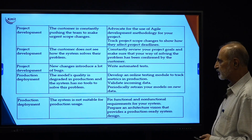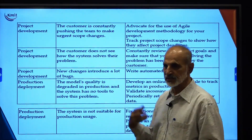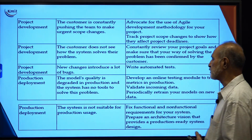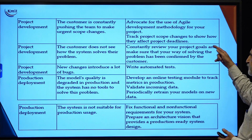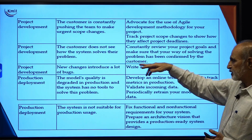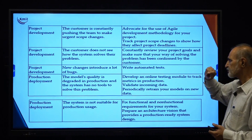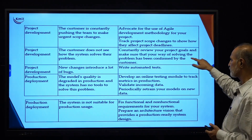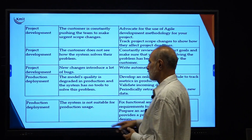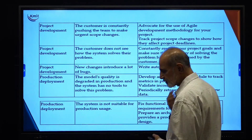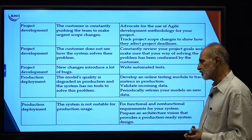Under project development, the customer is constantly pushing the team to make urgent scope changes — the solution is to advocate for agile development methodology and track project scope changes to show how they affect the deadline. If the customer does not see how the system solves the problem, constantly review your project goals and make sure your way of solving the problem has been confirmed by the customer. When new changes are introduced and cause bugs, you must have the right automated test cases in order to address those bug issues.